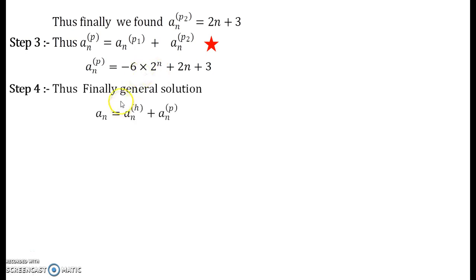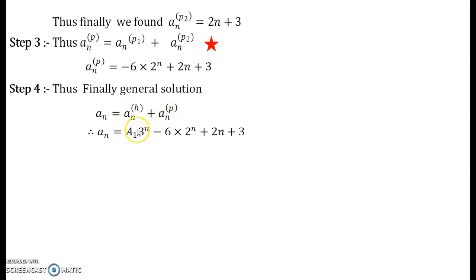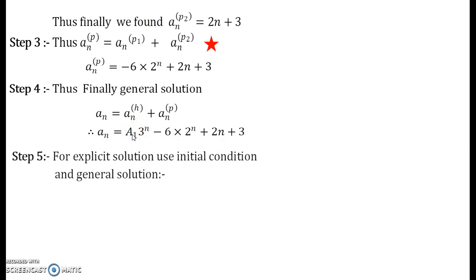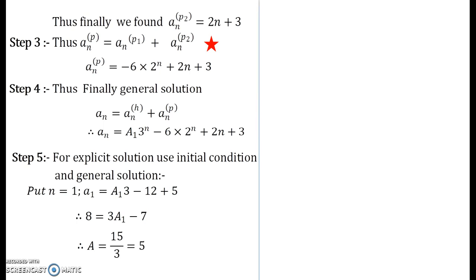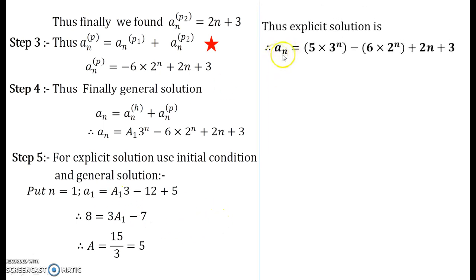Now you have your general solution: plug in the values from the homogeneous solution and the total particular solution. To find the constant A, use the initial condition a_1 = 8, putting n = 1 in the general solution gives A equals 5. So the explicit solution is a_n equals 5·3^n minus 6·2^n plus 2n plus 3.